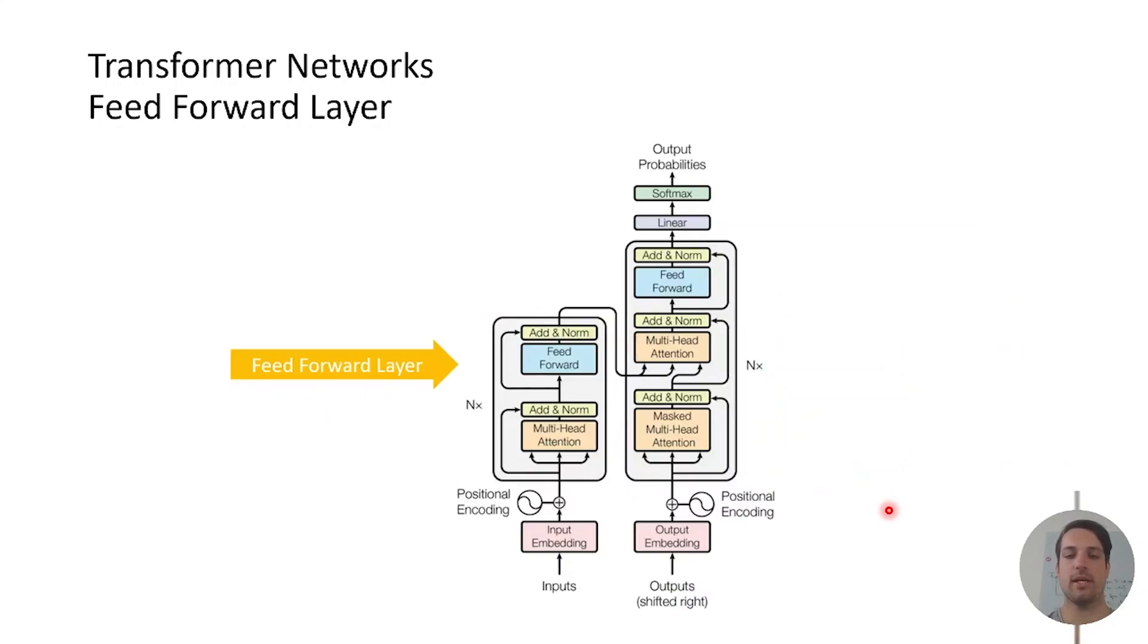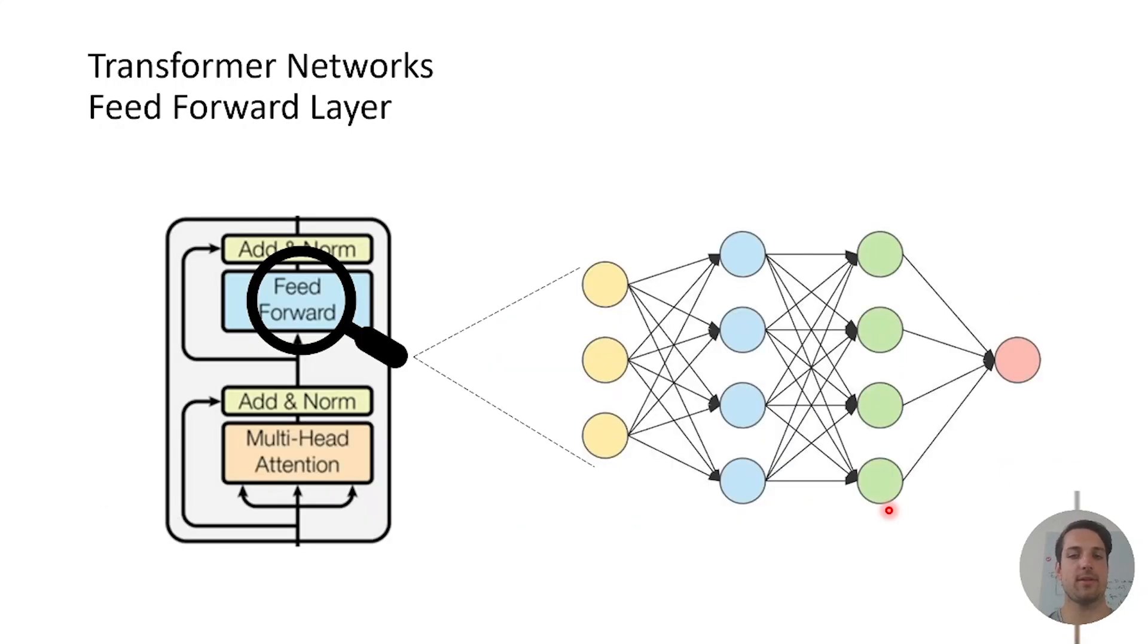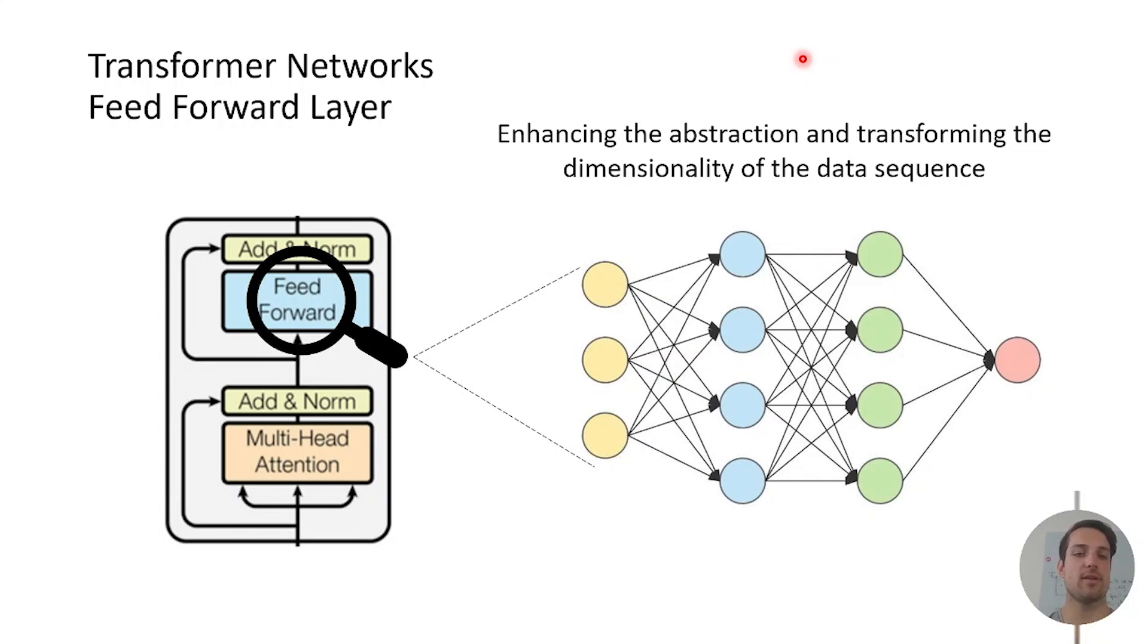The feedforward layer is not that complex. This is just put into the algorithm after a normalization layer. This should enhance the abstraction level of the algorithm but also transform the feature dimensionality which is needed. The most important part is the multi-head attention mechanism. The additional and normalizing layers are just for training purposes.